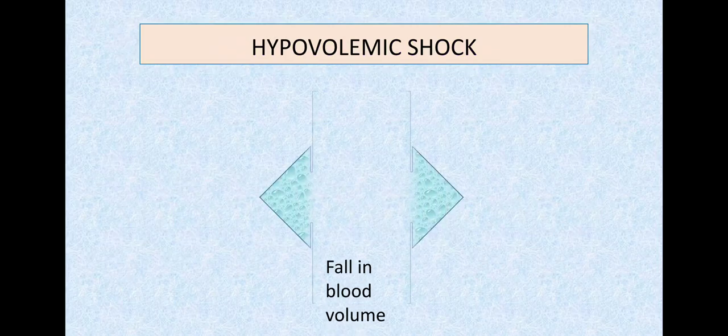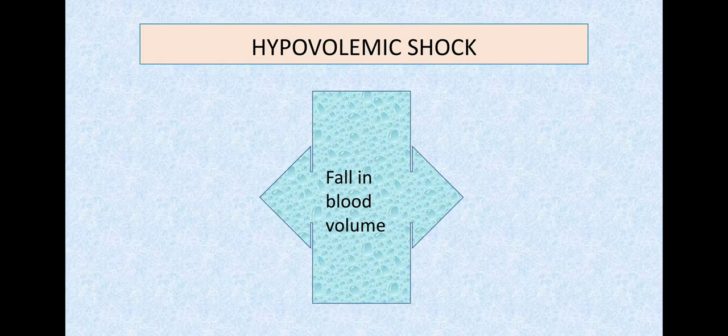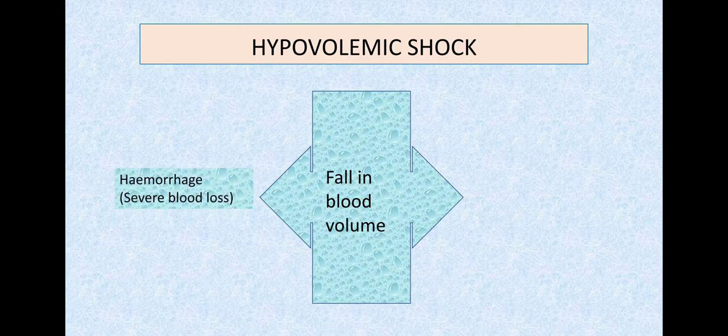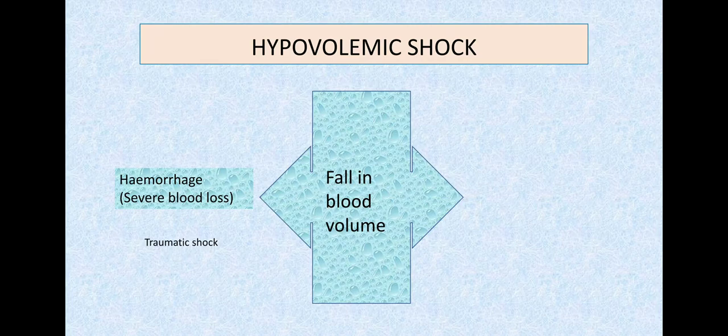In this video we'll discuss hypovolemic shock. Hypo means less, volume means volume, so blood volume is less. This fall in blood volume may be directly through severe hemorrhage—a lot of blood loss, for example in traumatic shock from injuries to tissues, muscles, or bones in roadside accidents or war casualties, or surgical shock.